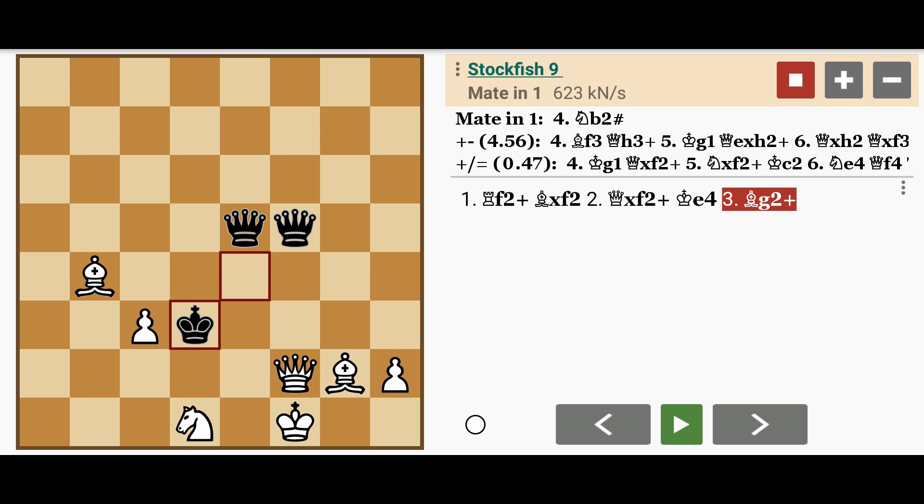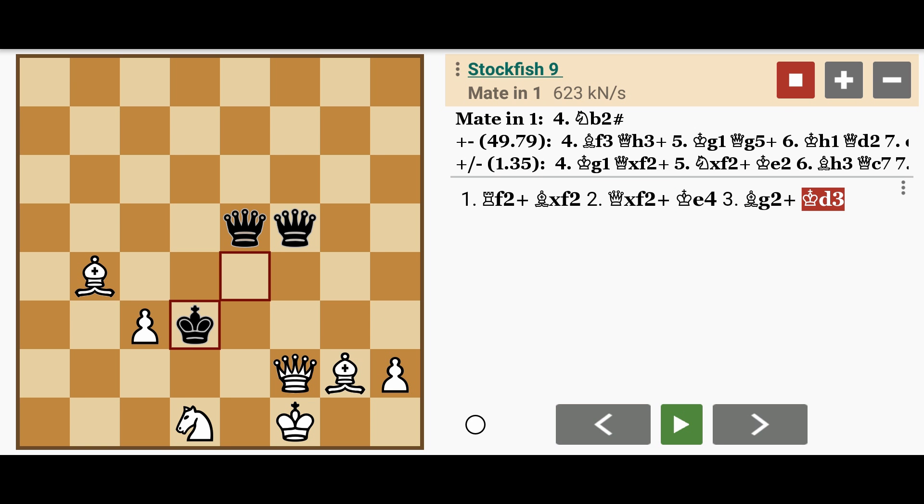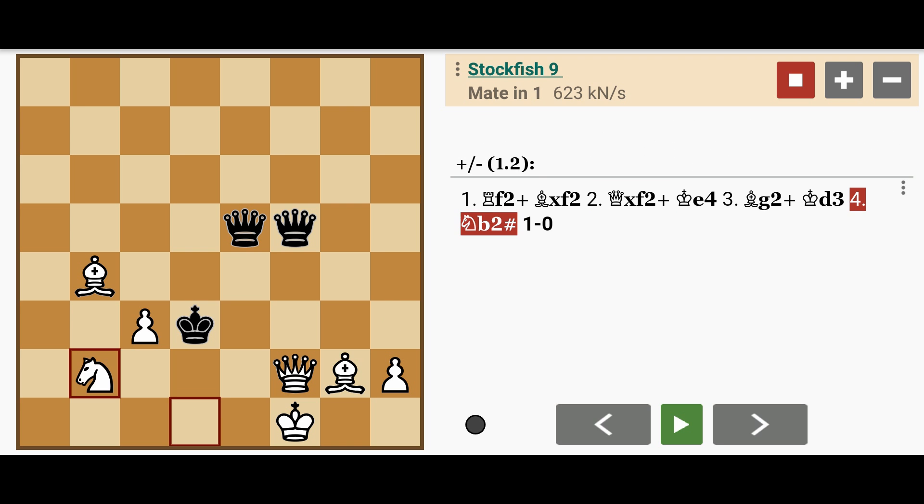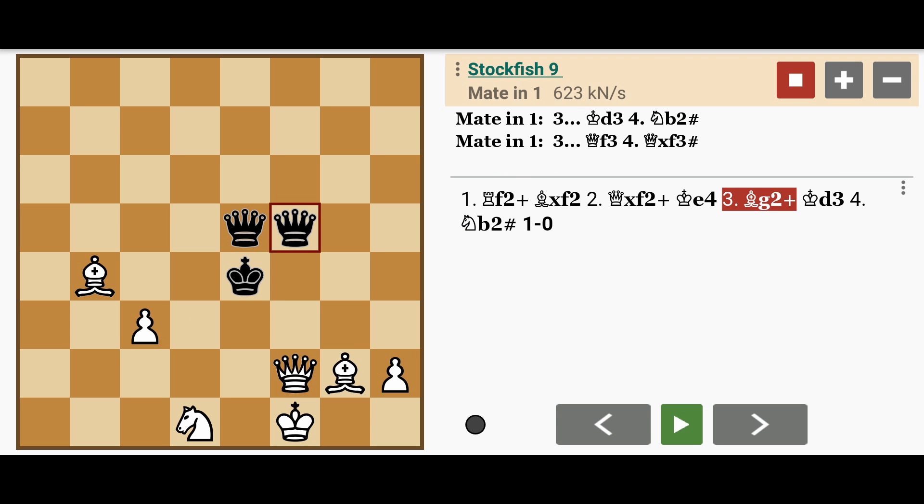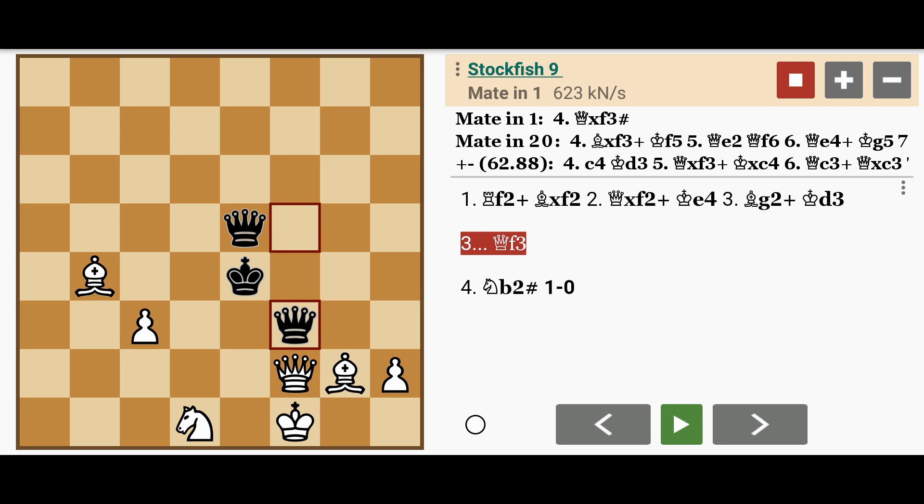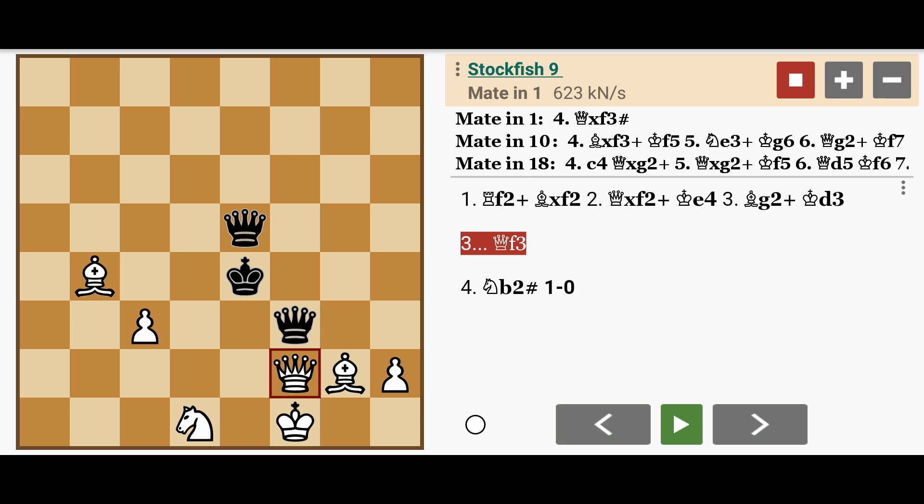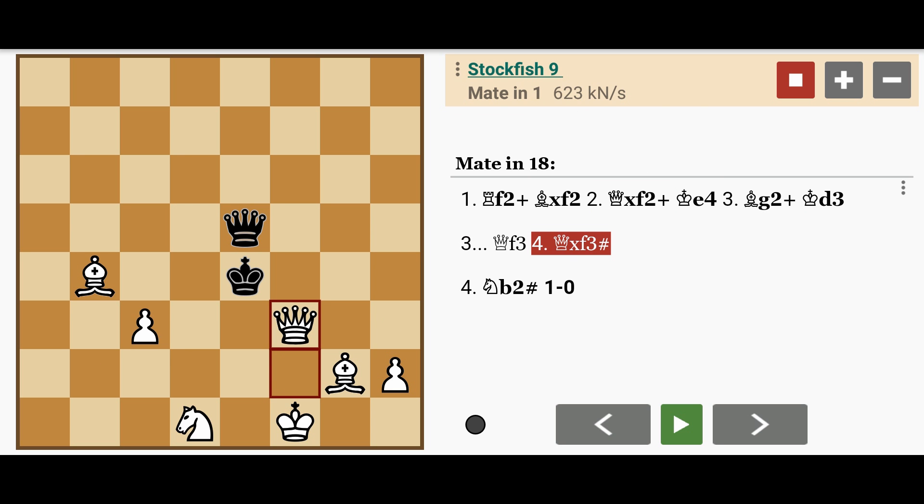The king can move to d3, in which case white wins with knight to b2 mate. Or the queen could intervene on f3, in which case white plays queen captures f3, checkmate.